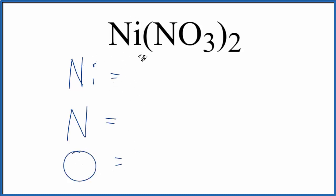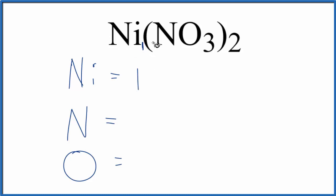For the nickel, there's nothing written after it. So when there's no subscript written, we assume it to be a one — so we have one nickel atom. Nitrogen, there's also nothing written, so we'll write one.